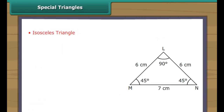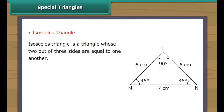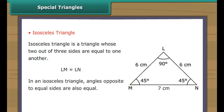Isosceles triangle. An isosceles triangle is a triangle whose two out of three sides are equal to one another. In triangle LMN, LM is equal to LN. In an isosceles triangle, angles opposite to equal sides are also equal. In triangle LMN, angle LMN is equal to angle LNM.